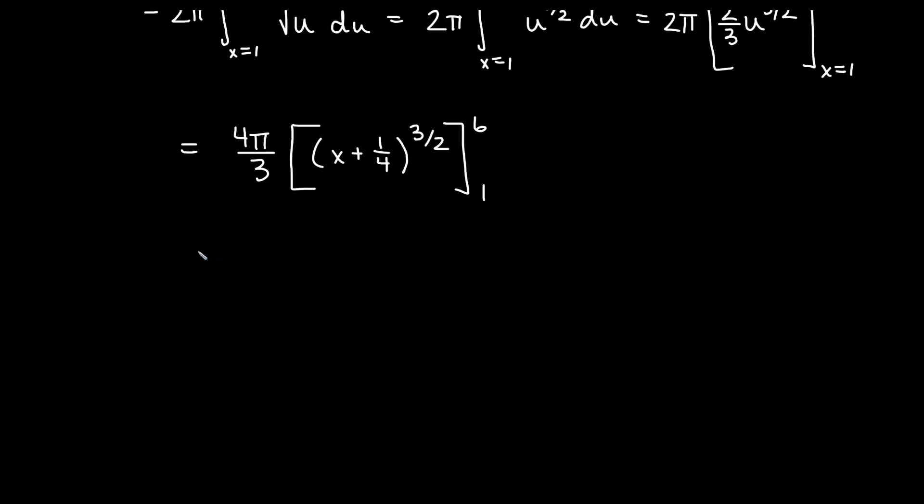And then replacing my u I would get x plus one fourth to the three halves from 1 to 6. We'll put our bounds in. So we have four π over three. If I plug in six I would get six and one fourth, which is 25 over four to the three halves minus. If I plug in one, one plus one fourth is five over four to the three halves.